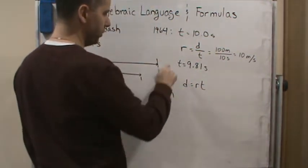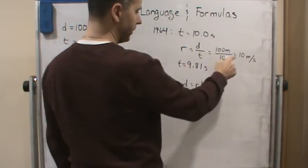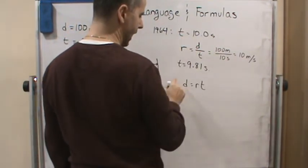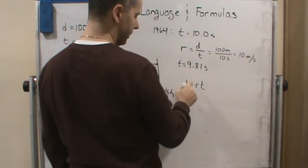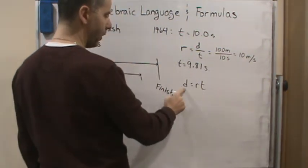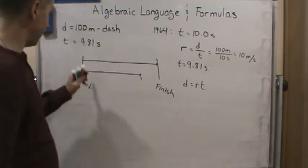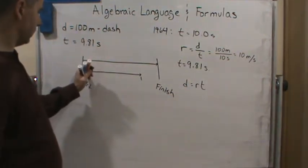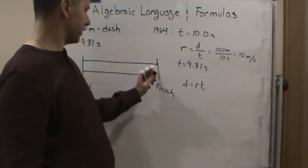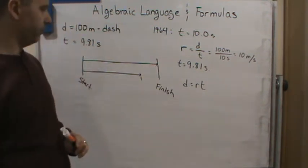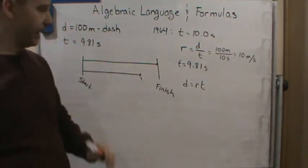So we used R equals D over T to find the rate. Now that we got the rate of Mr. Hayes, we're going to use D equals RT to find how far he ran at the point that Mr. Bolt went from the starting point to the finish line. So now that's the first thing we're going to do.